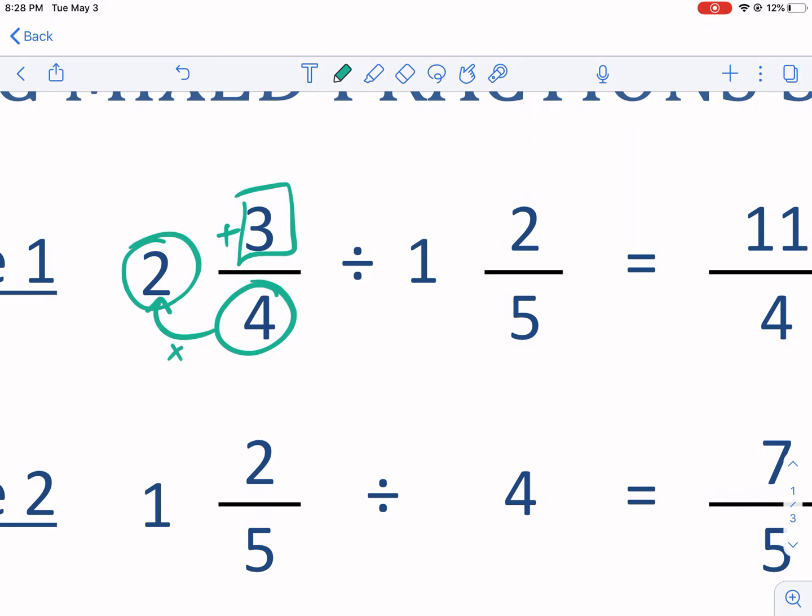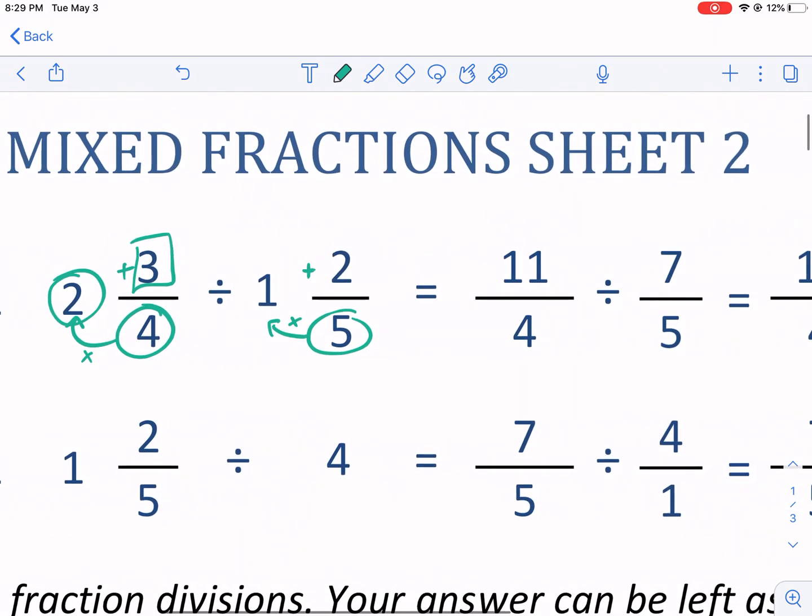So again, multiply the denominator times the whole number and then add the numerator. We're going to do that with both of these. So five times one, and then we're going to add the two in the top. Where does that leave us? Well, it leaves us with 11.